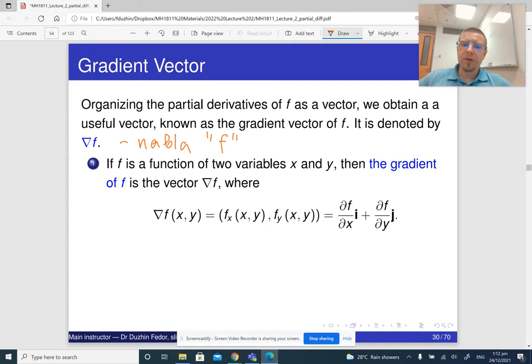If our function has two variables, then the first entry of nabla f is the partial derivative of f with respect to x, and the second entry is the partial derivative of f with respect to y. We can write it as df/dx i plus df/dy j, where i is the vector (1,0) and j is the vector (0,1). Sometimes we can write a little arrow to emphasize that it's a vector.